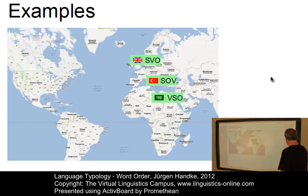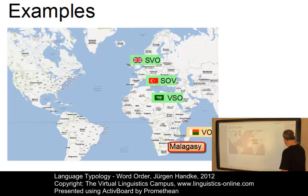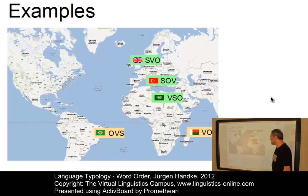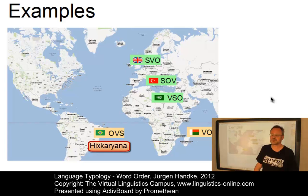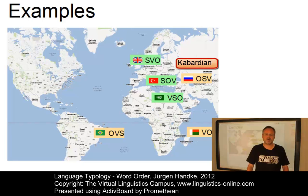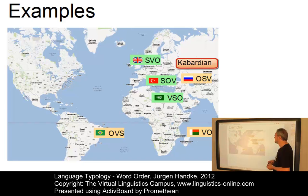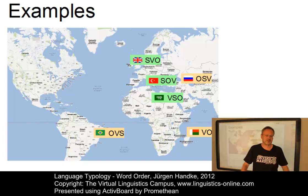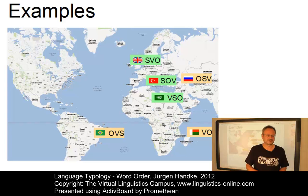For example, VOS is exhibited by Malagasy, spoken in Madagascar. Even less representative is OVS, exhibited by Hixkariana, spoken in Brazil, with only a handful of native speakers. And an OSV order is often associated with Kabardian, spoken in the Caucasian area, but it is highly disputed whether the word order is really OSV. SVO, SOV and VSO constitute the majority of the languages of the world. But how do we establish the basic word order of a language?